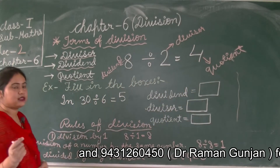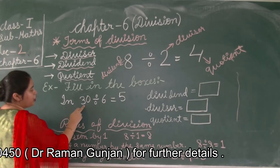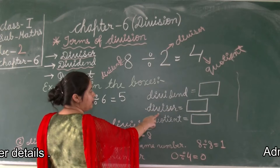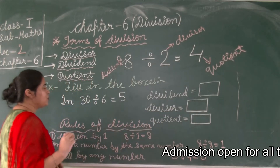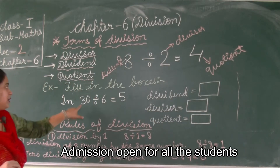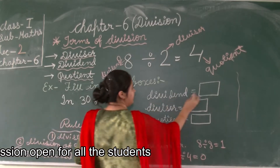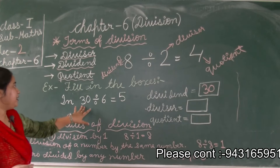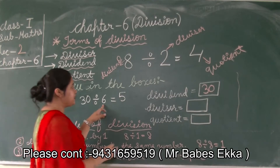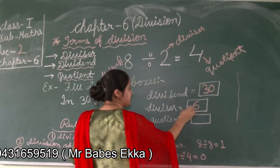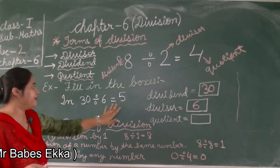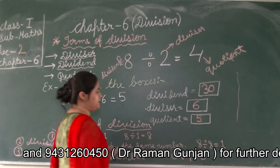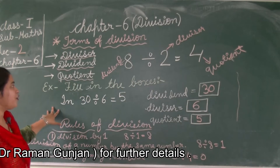For example, the question is: in 30 divided by 6 equals 5, what is the dividend, what is the divisor, and what is the quotient? The number that is being divided is 30, so we write 30 in the dividend column. 30 is being divided by 6, so 6 is our divisor. And the result 5 is the quotient.